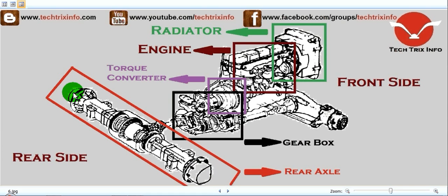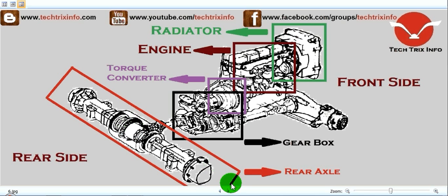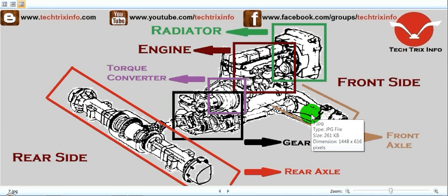At this point we have the left hand side rear wheels and here we have the right hand side rear wheels. This is the front side of the automobile and this is the rear side of the vehicle. This center portion is the differential of the rear axle.